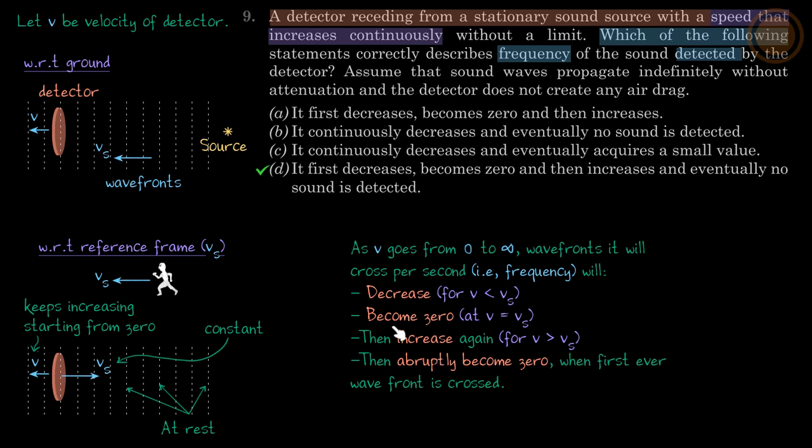So that's what I have written here. As v goes from zero to infinity, wavefronts will cross per second, and this is the frequency detected. This will decrease for v less than vs. When v is less than vs, frequency will decrease.